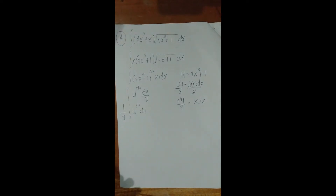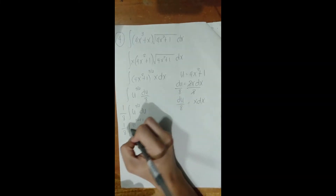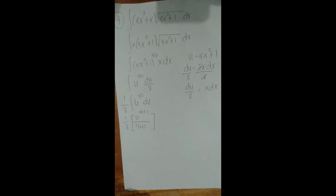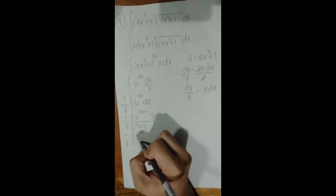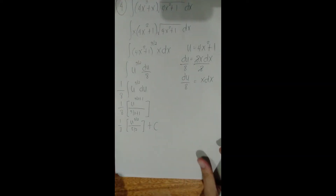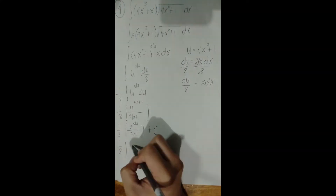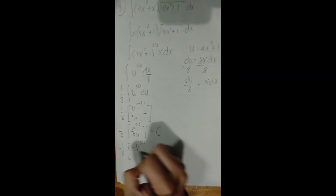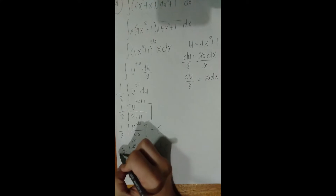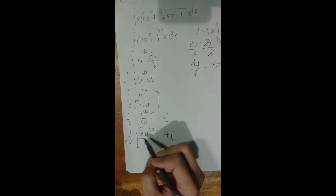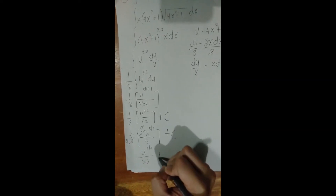Applying the power formula: (1/8) · [u^(3/2 + 1)] / (3/2 + 1). Now 3/2 + 1 = 5/2, so it becomes (1/8) · u^(5/2) / (5/2) + C. Dividing by 5/2 is the same as multiplying by 2/5, giving (1/8) · (2u^(5/2)/5) + C. Simplifying: (1/4) · (1/5) = 1/20, so the result is u^(5/2) / 20 + C.